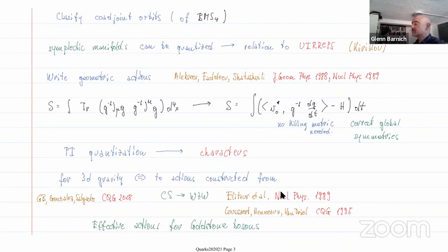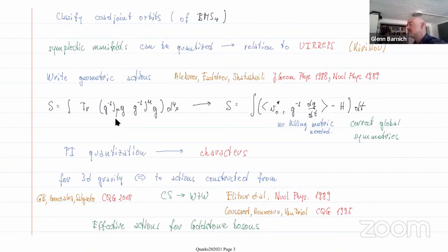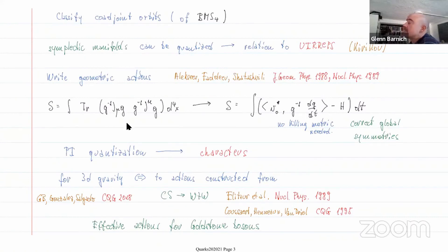They have written so-called geometric actions — effective actions for Goldstone bosons. The usual way you do that when you have a Lie group is to write an action like trace g minus one dg nu g squared. But suppose you don't have a trace in your group, like if you're interested in the bi-Virasoro group. Then you can still write an action if you use a co-adjoint vector to pair with the Lie algebra element. They did a path integral quantization of standard groups and showed relations to the characters of the group from the path integral formulas.